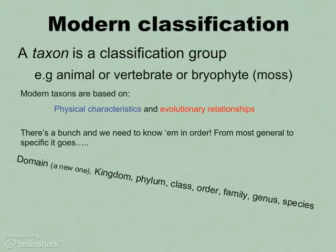You can come up with any kind of mnemonic device that you'd like to. I remember learning 'Kings Play Chess on Friday, generally speaking,' taking the first letter from each one of those. Now that we have Domain, that relatively new one, you can just turn it into a question: 'Do Kings Play Chess on Friday, generally speaking?' You can play around with that and come up with whatever mnemonic device you would like. We need to remember that the domain is the most general and the species is most specific — in fact, that's where the word species comes from, being very specific.